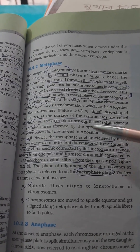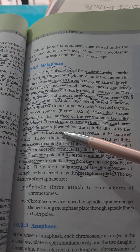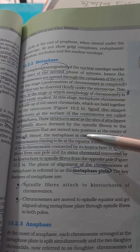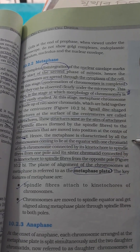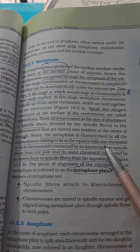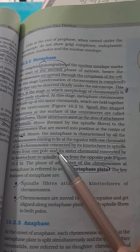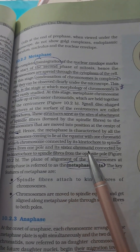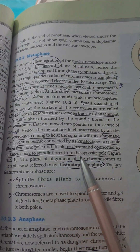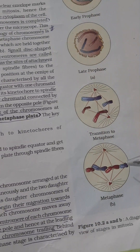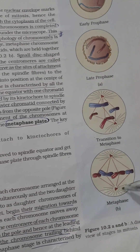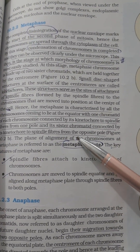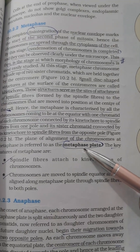These kinetochore structures serve as the site of attachment of spindle fibers formed to the chromosomes, which are moved into position at the center of the cell. Hence, metaphase is characterized by all chromosomes coming to lie at the equator, with one chromatid of each chromosome connected by its kinetochore to a spindle fiber from one pole, and the sister chromatid connected by its kinetochore and spindle fiber to the opposite pole. The characteristics of the metaphase plate have been asked in board examinations.